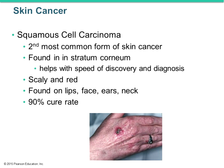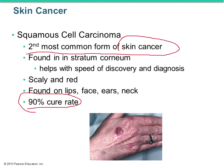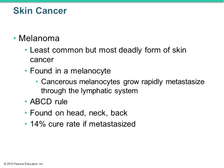Squamous cell carcinoma is the second most common form of skin cancer and also has a pretty high cure rate. Its appearance is more scaly and red, and it's found in the stratum corneum — typically on the lips, face, ears, and neck.